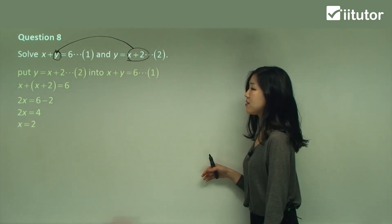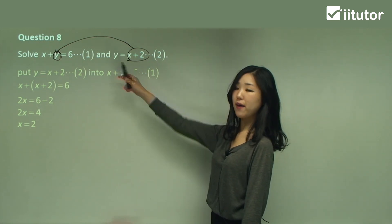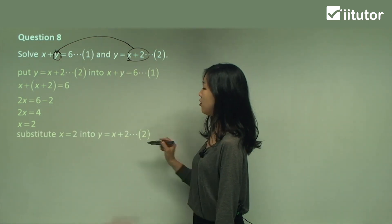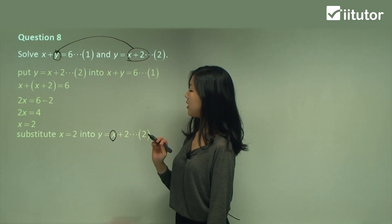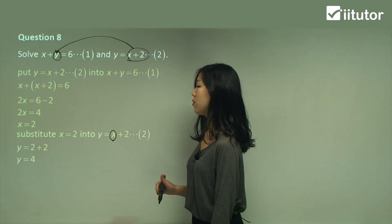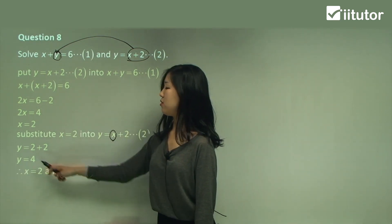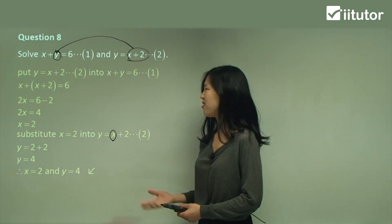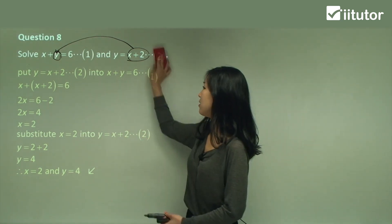I'm going to substitute x equals two into equation two because y is the subject there. So I put x equals two in: two plus two is four. Therefore x equals two and y equals four — that is the answer. The substitution method is easy.